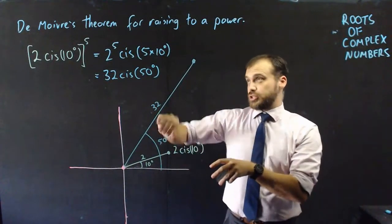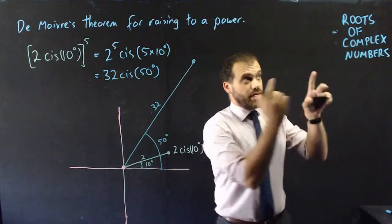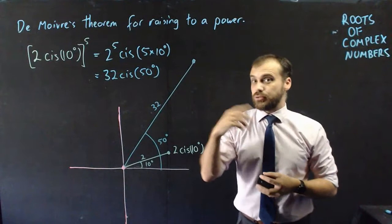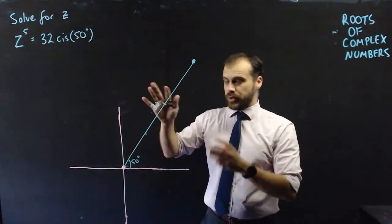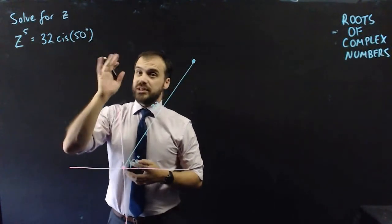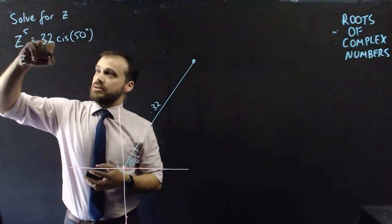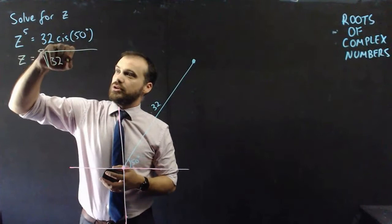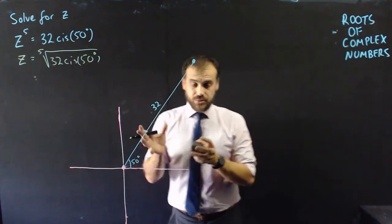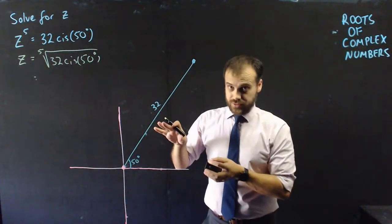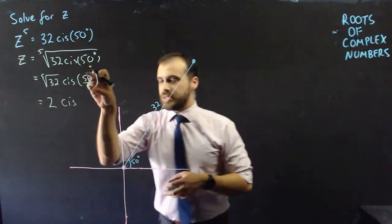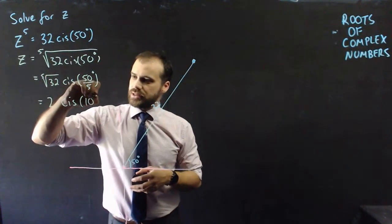This geometric interpretation of raising something to a power is vital to your understanding of roots of complex numbers. Now we're going to work backwards. We're saying z to the 5 equals 32 cis 50, and now we're going to solve for z, which is going to be the 5th root of 32 cis 50. You should already know one answer because we just did it. We take the 5th root of the modulus, which is 2, and cis, and we take our angle and divide it by 5, and we get 10 degrees.